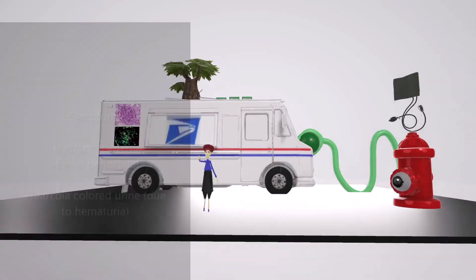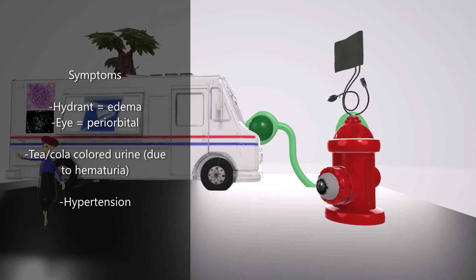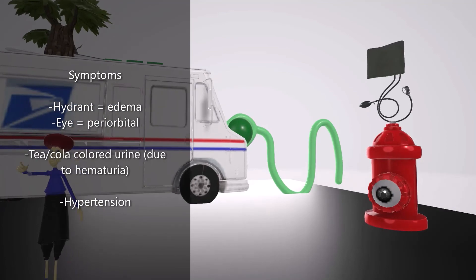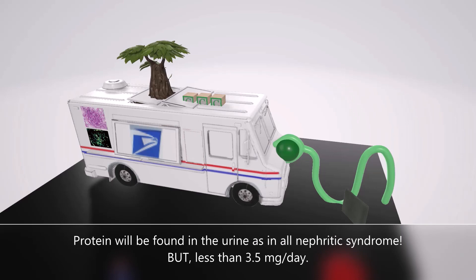Now let's talk about symptoms. The hydrant with an eye represents periorbital edema, seen in acute post-streptococcal glomerulonephritis, because the soft connective tissue around the eye is susceptible to edema. His blue pants turning black represents the tea or cola-colored urine. The blood pressure cuff on top of the hydrant helps remember the hypertension seen in this condition — a characteristic shared by most nephritic syndromes. And since it's a nephritic syndrome, we'll find protein in the urine, but less than 3.5 grams per day.